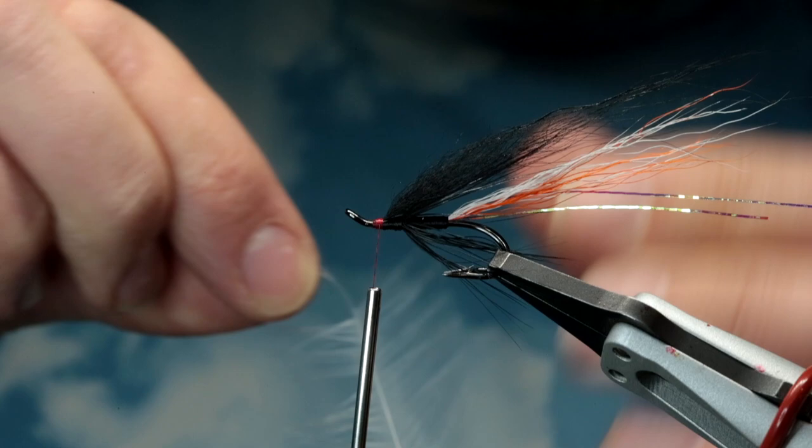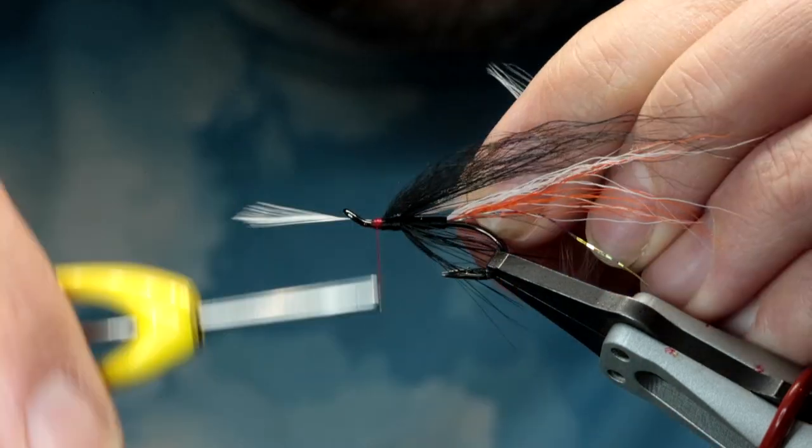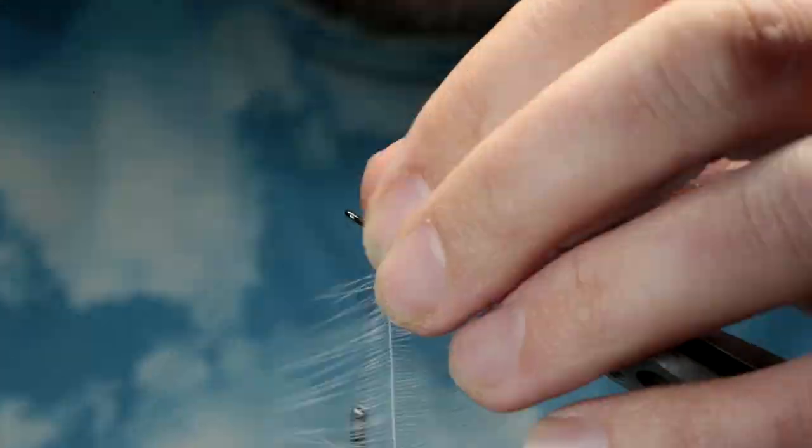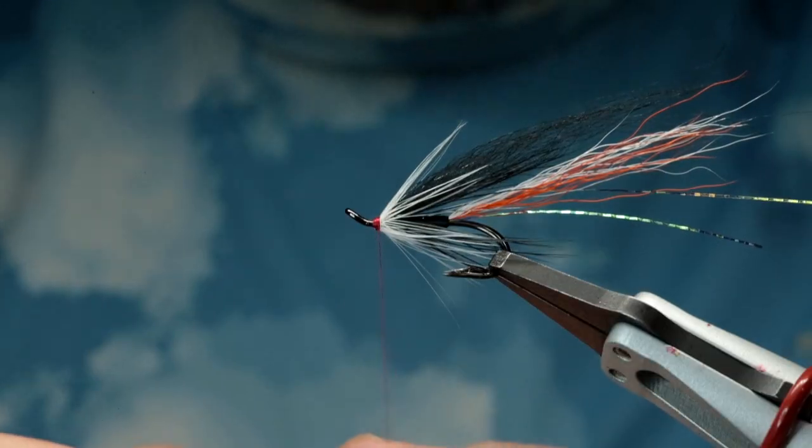And then finally, for the front hackle, just a bit of white cock hackle. Lastly we're going to put in the JC.